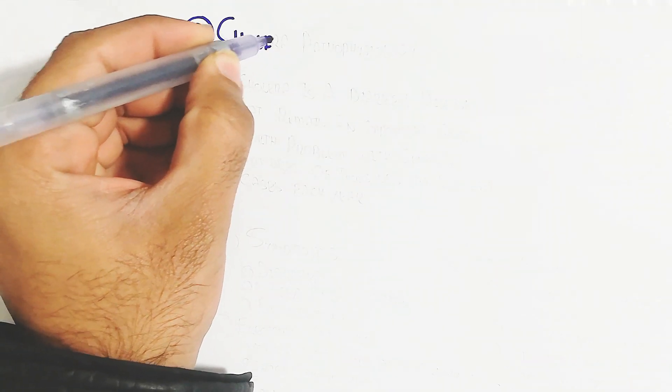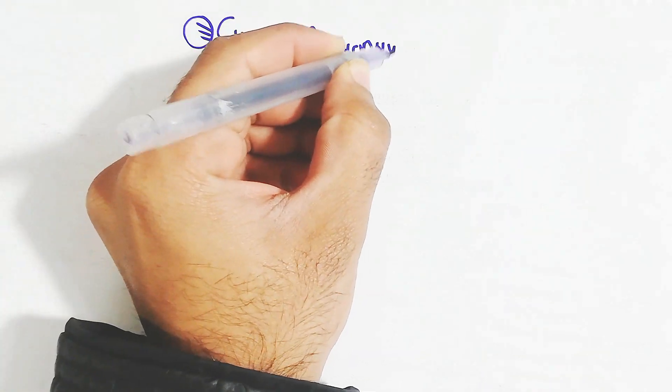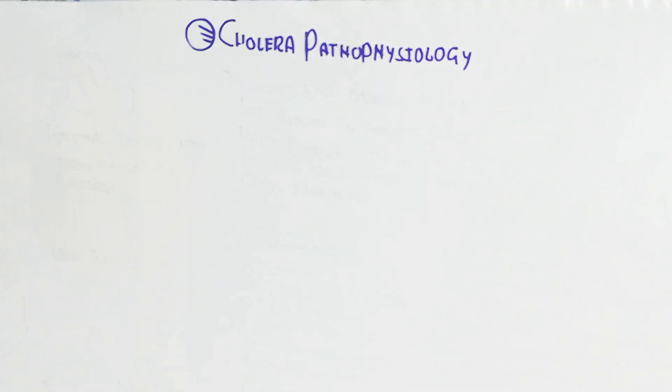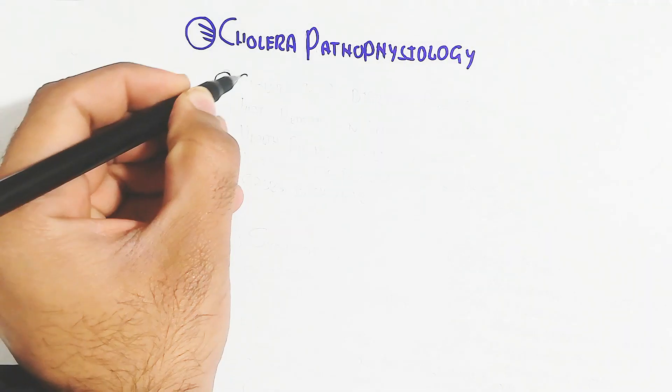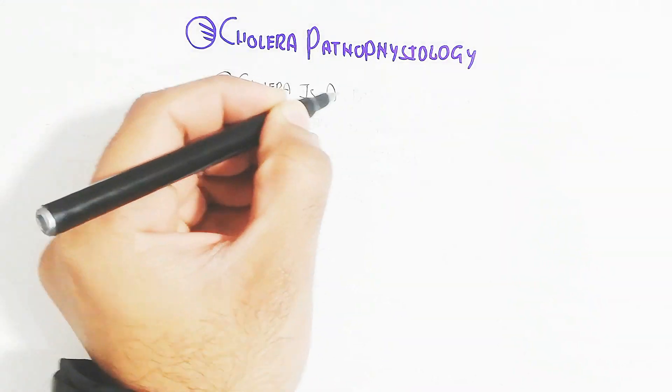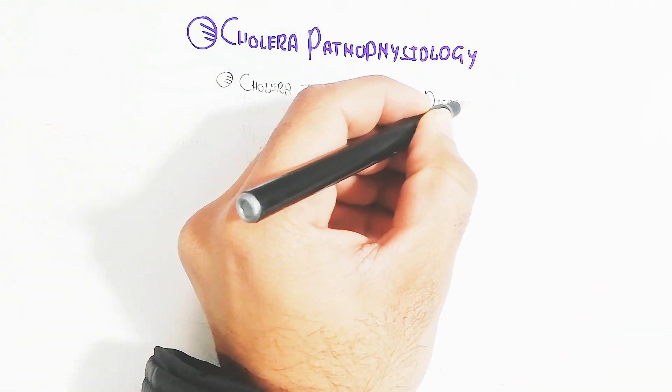Hello, in this video we will learn about cholera pathophysiology. Cholera is a bacteria with a vibrio structure and comma shape.